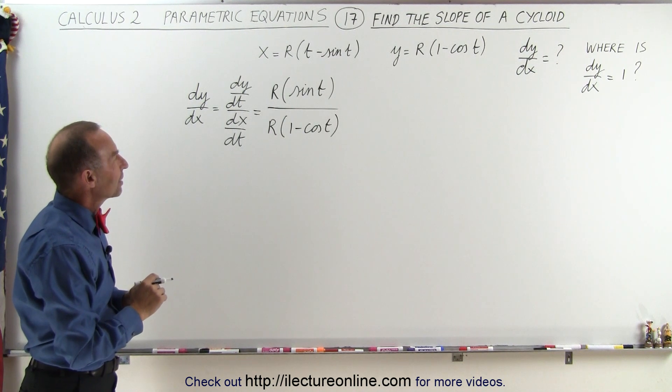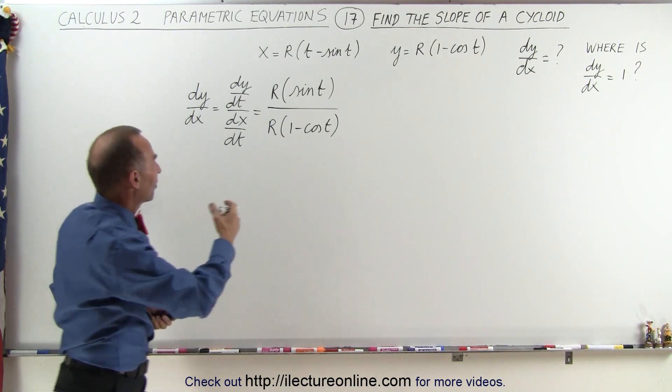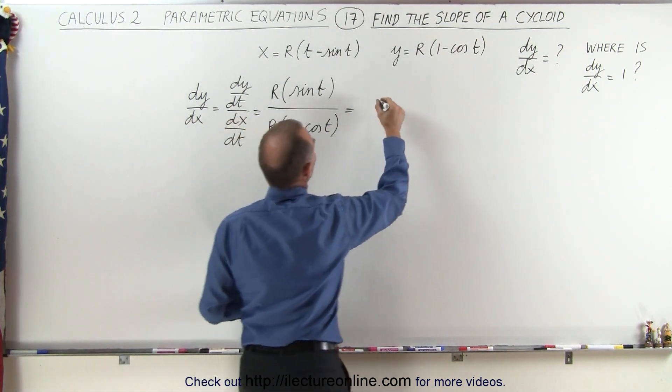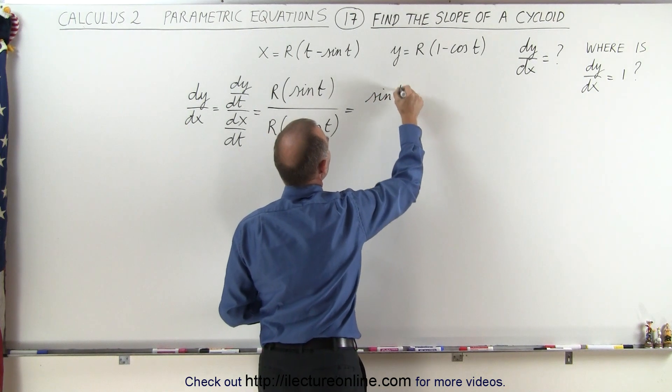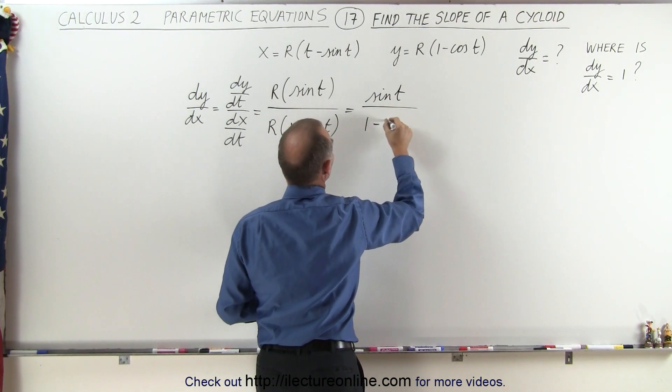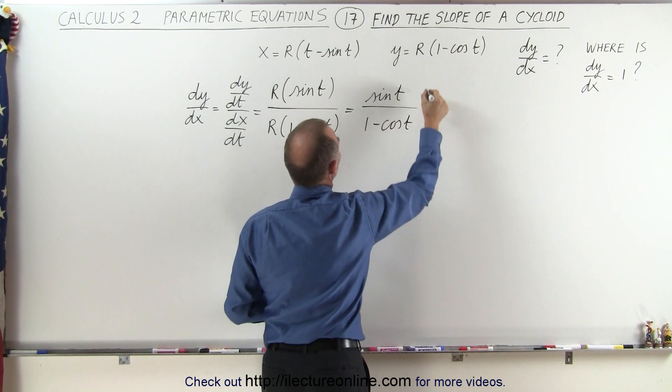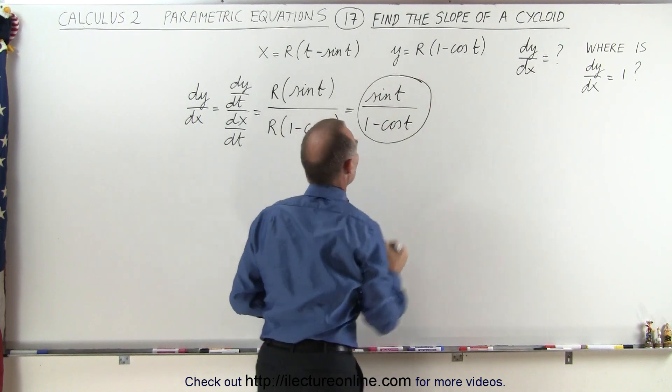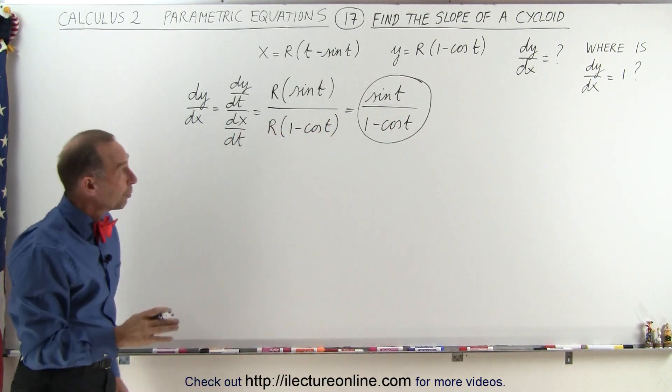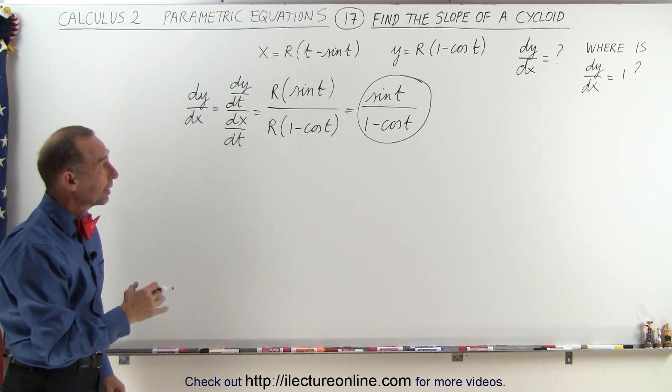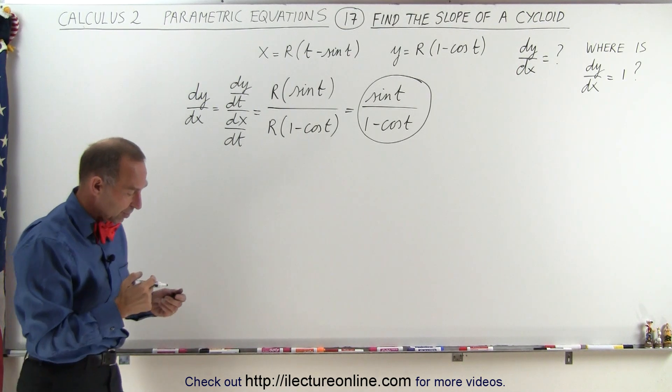So now we're trying to find, oh by the way, let's simplify that because the r's cancel out, so this becomes equal to the sine of t divided by 1 minus the cosine of t. So this here is the derivative of y with respect to x, and again since we used parametric equations, the variable there is still the parametric variable t.